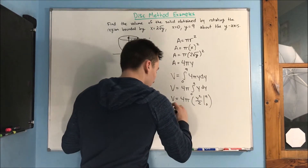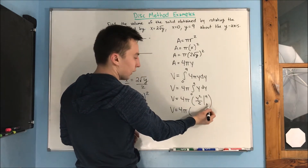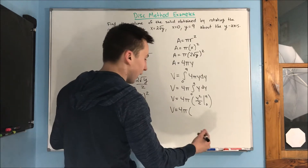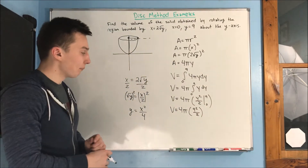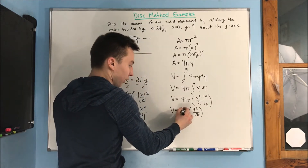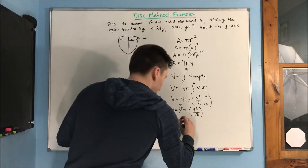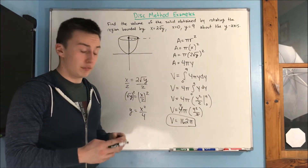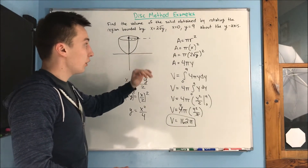When we evaluate, plugging in 0 gives zero, so we just need 9 squared over 2. We know 9 squared is 81, and the 2 cancels with the 4 to leave a 2, so we get 81 times 2, which is 162 pi. That is the volume and the answer for the first problem. Really, nothing too hard — draw your picture first, find your area, and then use your area to find your volume.